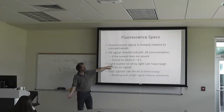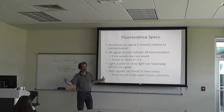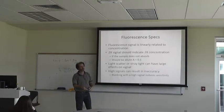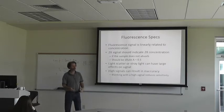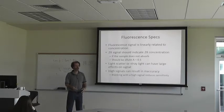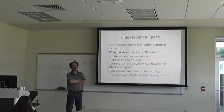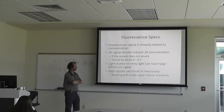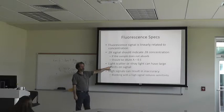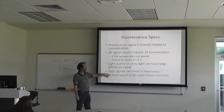Light scatter or stray light can have large effects on the signal. Stray light coming in will make an apparent increase in signal, same thing with light scatter. What causes light scatter common in samples? Turbidity, which comes from lipids — VLDLs and chylomicrons. High signals can result in accuracy issues too, and if you blank with a high signal it's going to reduce the sensitivity.